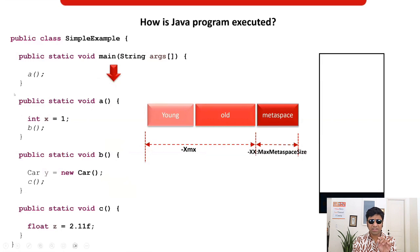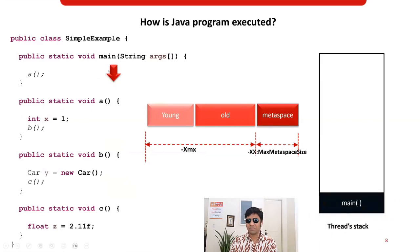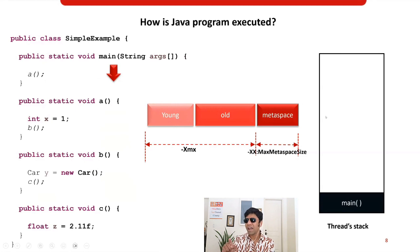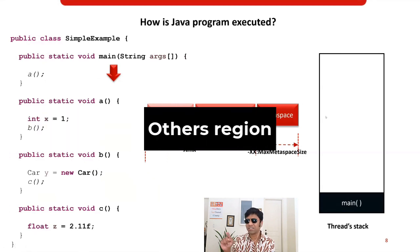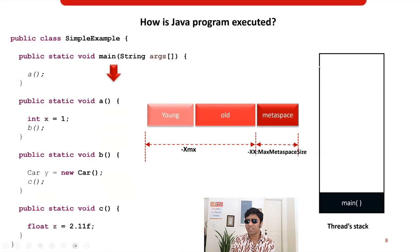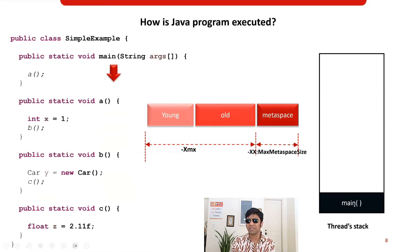Now let's see how the JVM executes this program. Every program needs to be executed by a thread — let's visualize the red arrow as a thread. When a thread is created, which memory region is it stored in? As per our earlier discussion, it is created in the 'others' region. Every thread has a stack, present in the 'others' region. When the thread enters the main method, a stack frame is automatically created.